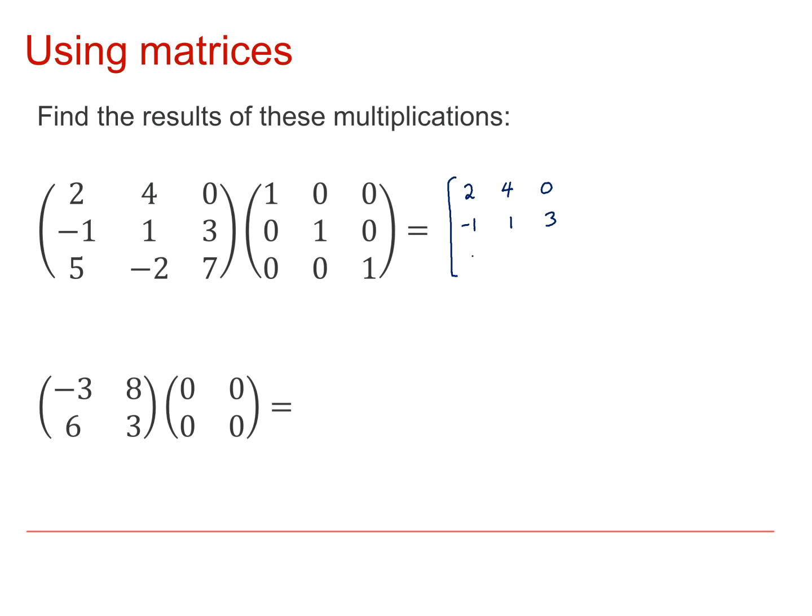Final row first column, 5 plus 0 plus 0 is 5. Third row second column, 0 plus minus 2 plus 7 is minus 2. And third row third column, 0 plus 0 plus 7 is 7.